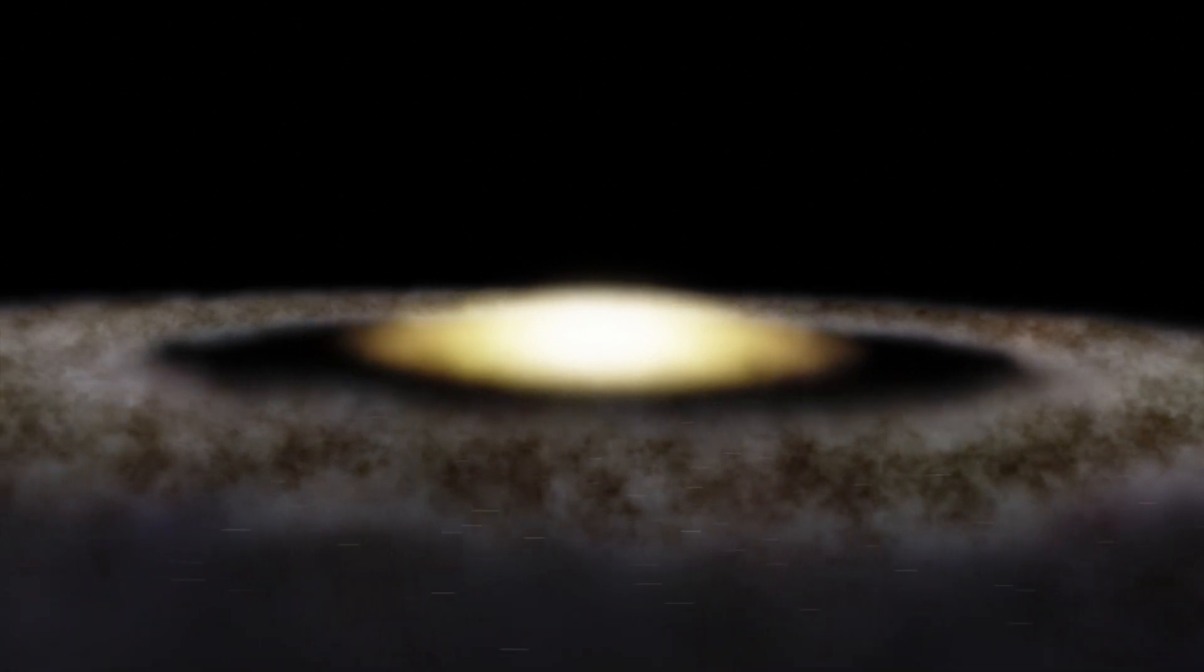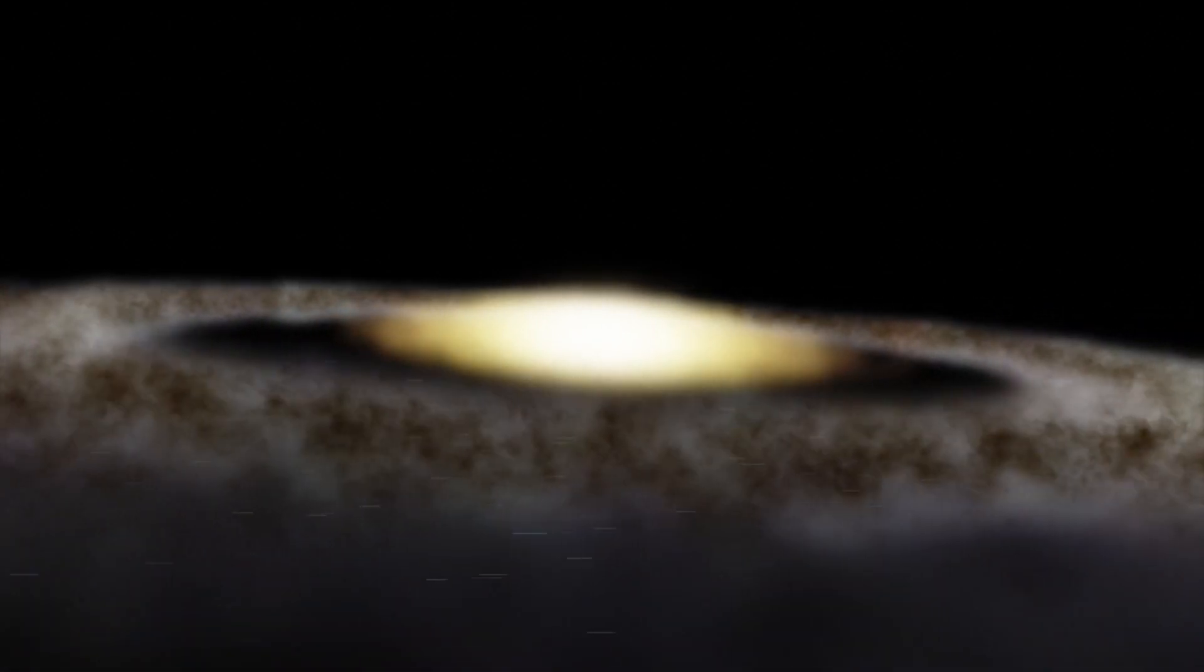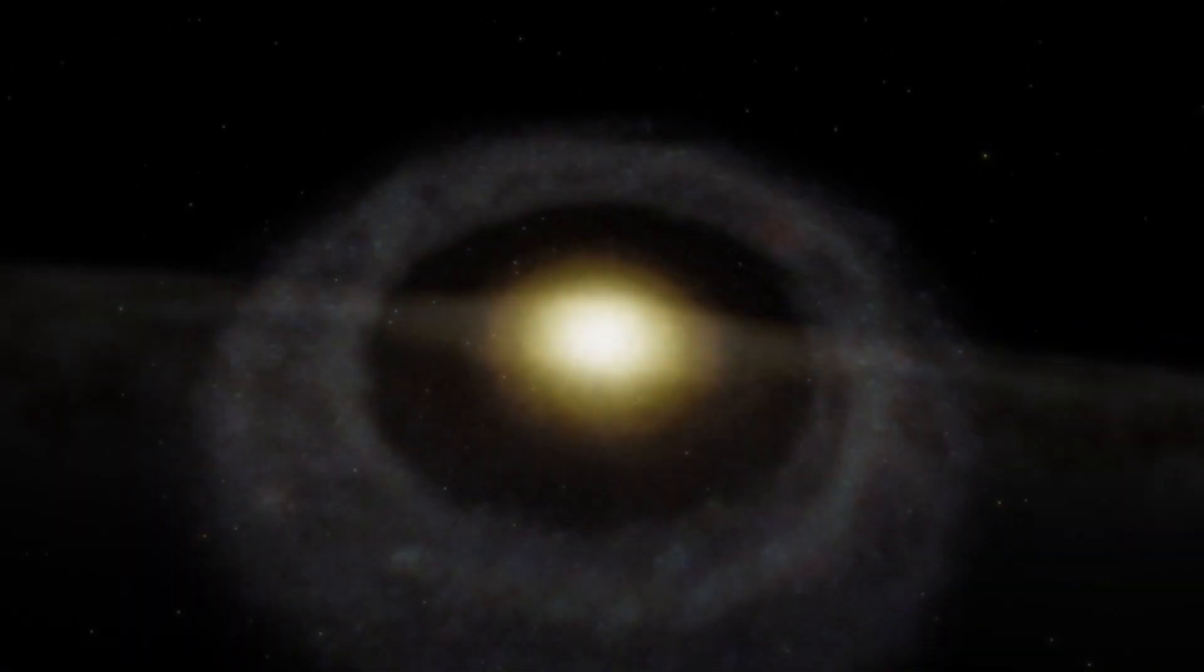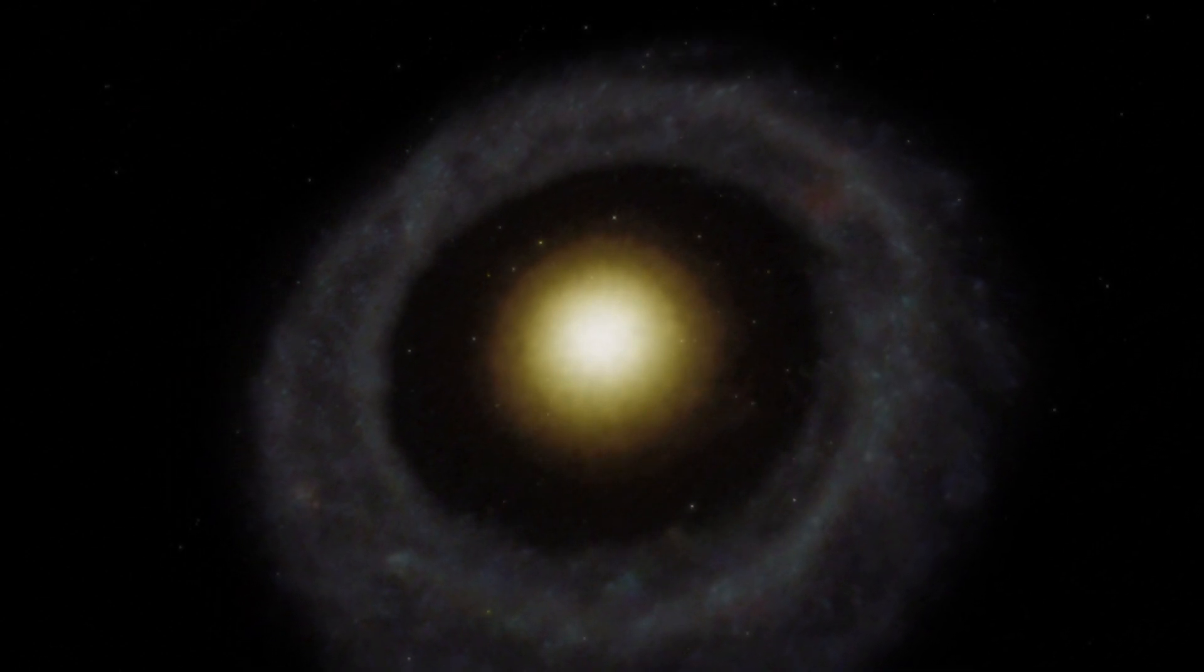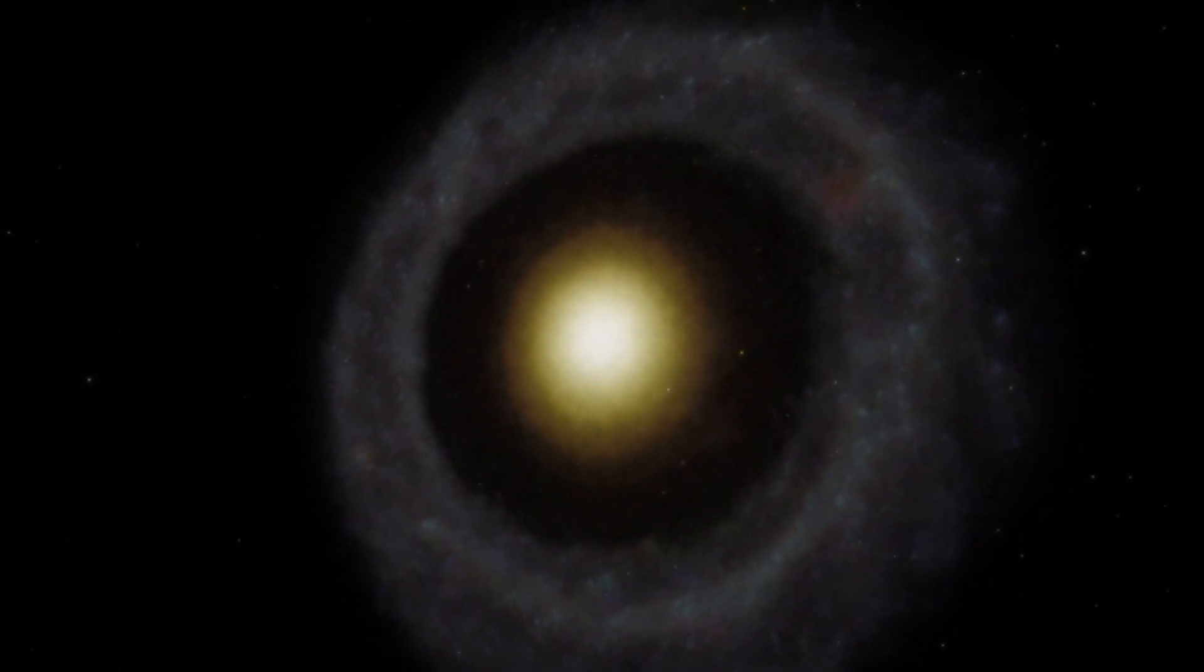It would take light 6,500 years to complete a revolution around this galaxy. How Hoag's Object formed remains unknown.